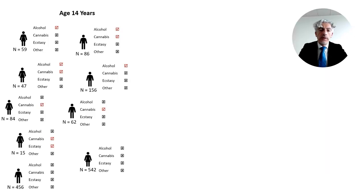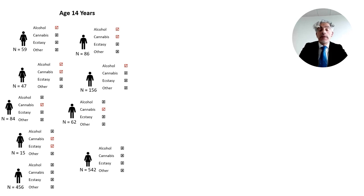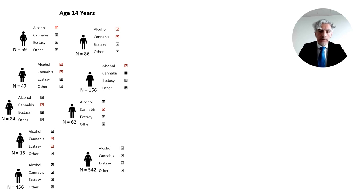Let's assume we ask adolescents to report if they have frequently used any of these substances in the last month: alcohol, cannabis, and so on. Adolescents are 14 years of age the first time we ask them these questions, and just for the sake of the example, let's assume there are two genders, males and females.